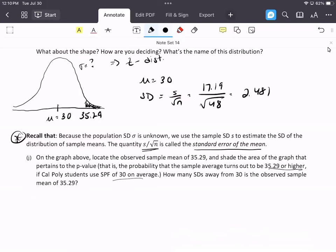How many standard deviations away from 30 is the observed value of 35.29? We're going to find the t-score, not the z-score. We take the observed value from the sample minus the population parameter divided by the standard deviation we found, and we get 2.13. We already know there's evidence against the null because we're more than two standard errors away.